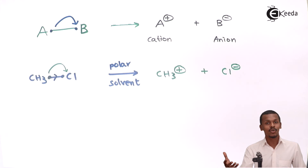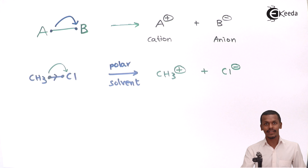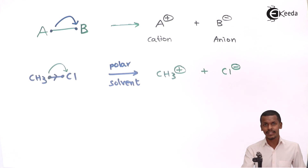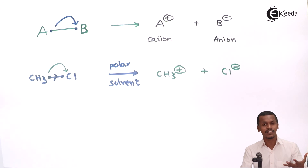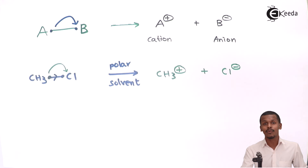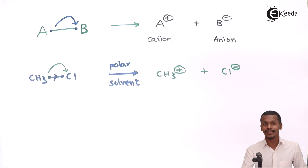The methyl radical is a very short-lived species, while the methyl cation can be stabilized by the surrounding environment. These are the key differences between homolytic and heterolytic fission. That is what I wanted to explain — thank you for watching this video. I hope you liked it and will share it with your friends. Don't forget to subscribe.